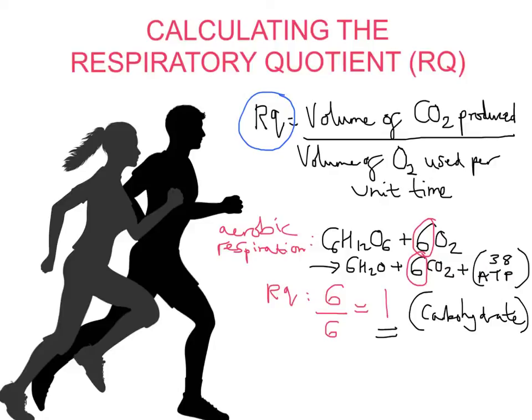If we, for example, were to work out the RQ value for fat or lipid, using the same sort of method, the same equation. Let's have a look at this one. So this is for lipid. Let's see what RQ value we get this time. So if we write the balanced symbol equation, it comes out as actually 2C18H34O2 plus 51O2 gives, and we get 36CO2 and 34H2O. So I'm not going to put the energy value here.